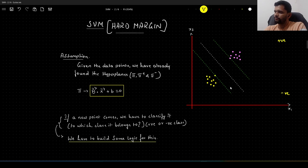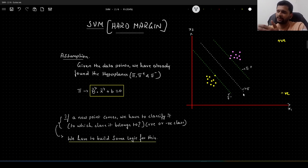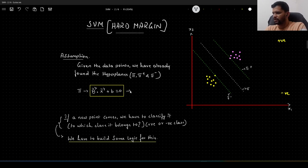For the time being, let us assume that we have already found these hyperplanes. Mathematically, we represent hyperplanes using the symbol pi. So this is pi, this will be pi positive, and this will be pi negative. We have already seen this in my earlier video where I explained in detail about hyperplanes and the equation of a hyperplane in n-dimensional space. Given the assumption that we have already found this particular hyperplane pi, the equation for it would look something like this — this is the equation of the hyperplane.